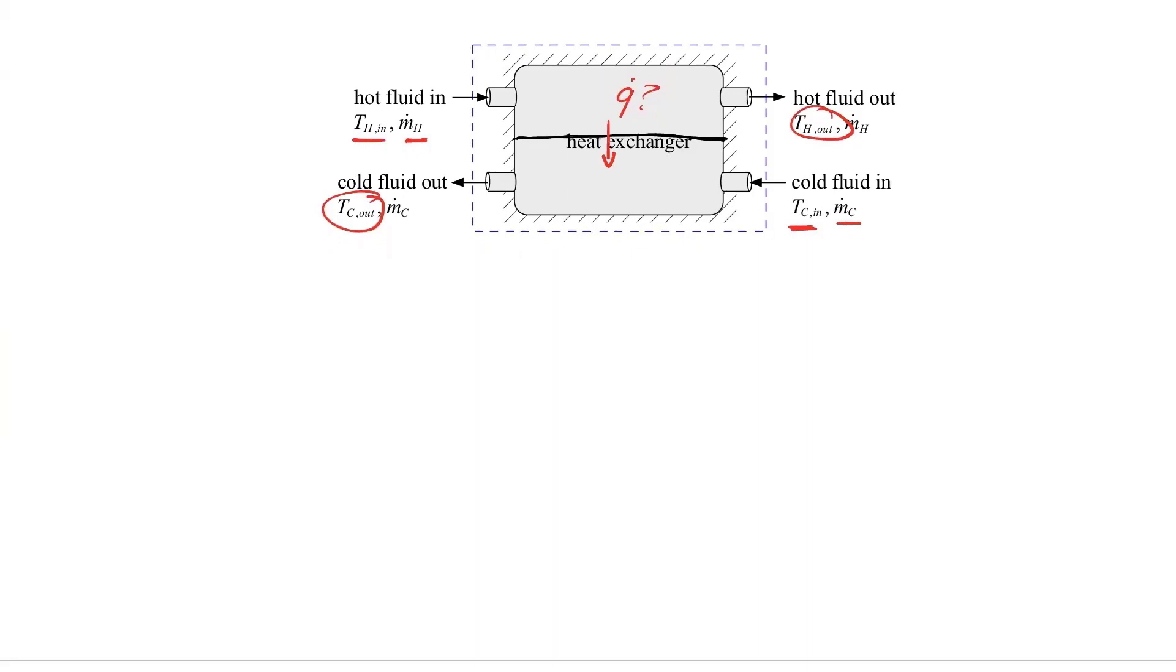Energy balance on the full thing that I've drawn the dotted line around. What's coming in? I have M dot H at i H in plus M dot C at i C in. And then leaving, I have minus M dot H at i H out minus M dot C at i C out, all equals zero. We'll assume this is a steady state problem. We're not trying to get our PhDs by making this transient.